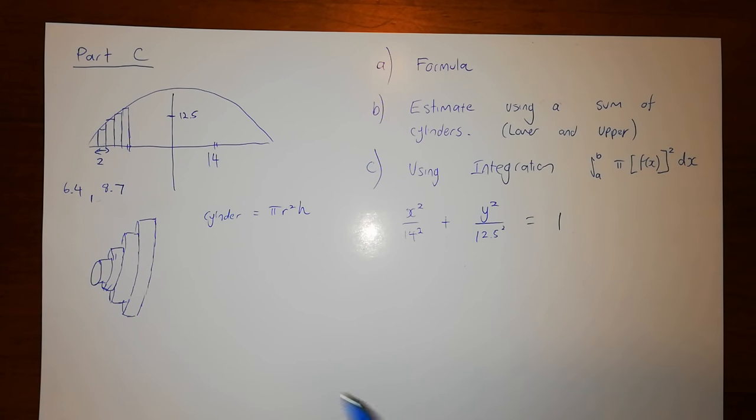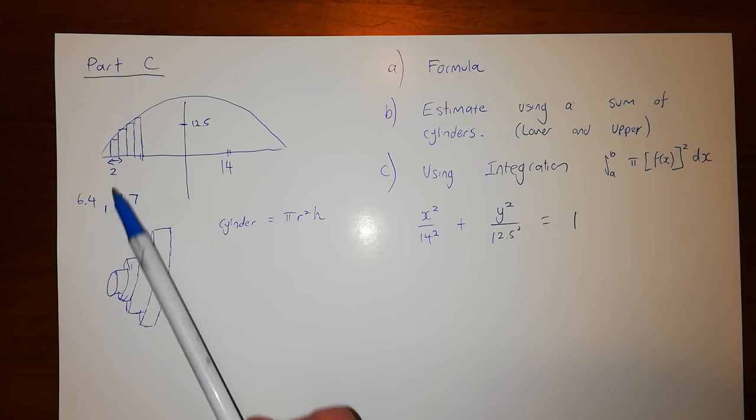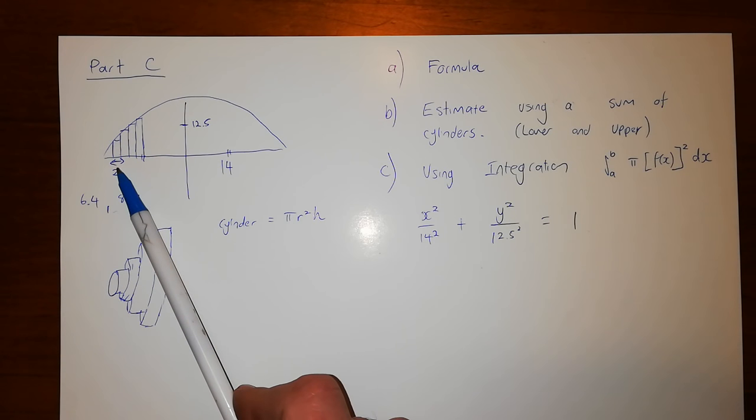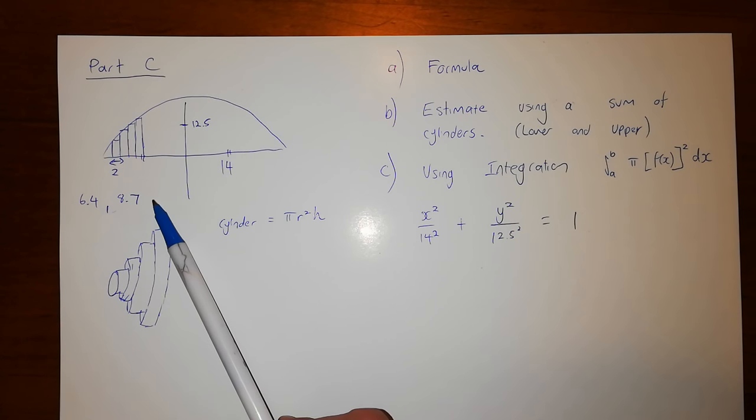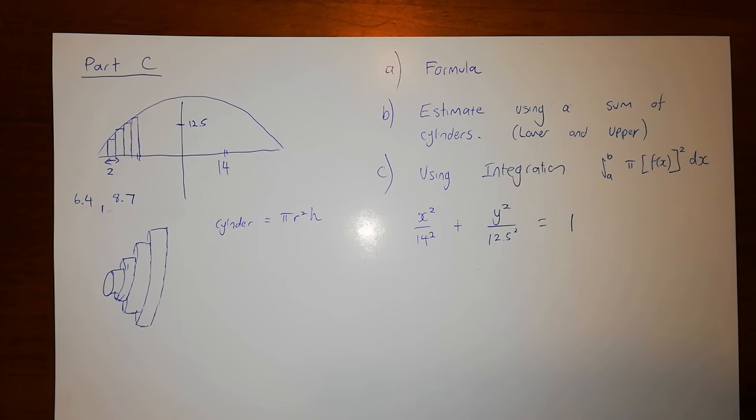So firstly for part C, it's talking about an ellipsoid shape or a watermelon, and we're given the formula for that particular ellipsoid and we're also given some heights. I haven't listed all of them here, but the heights of these lines here and we'll talk a bit about what they mean.